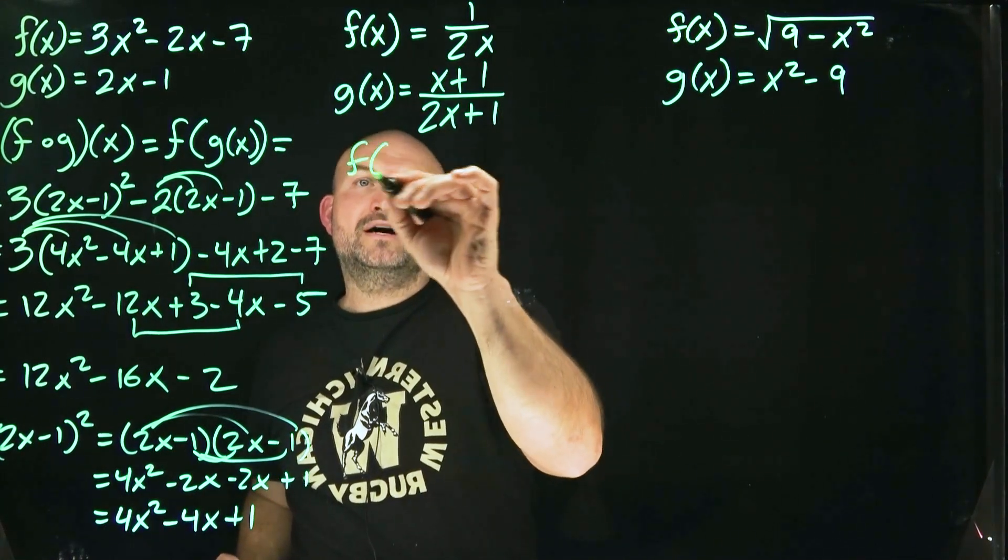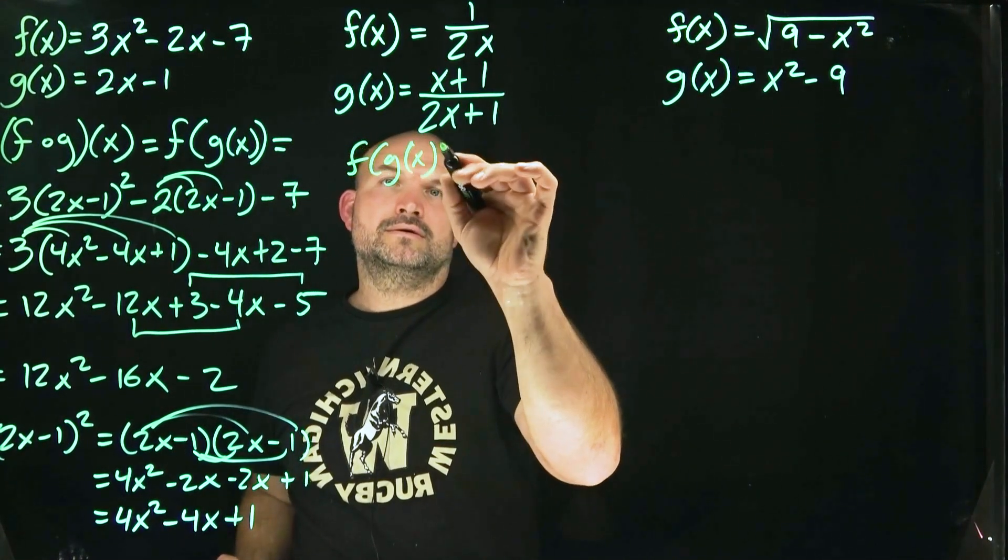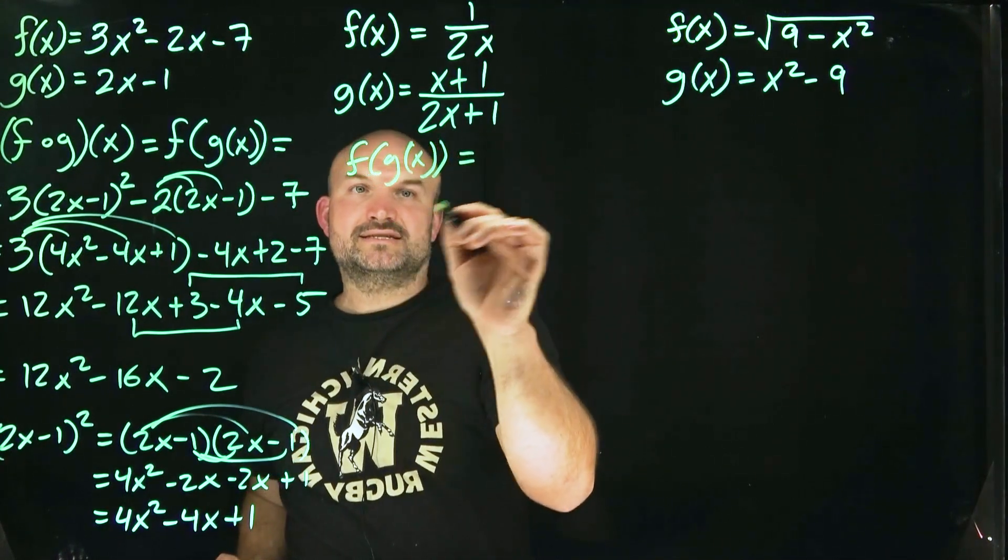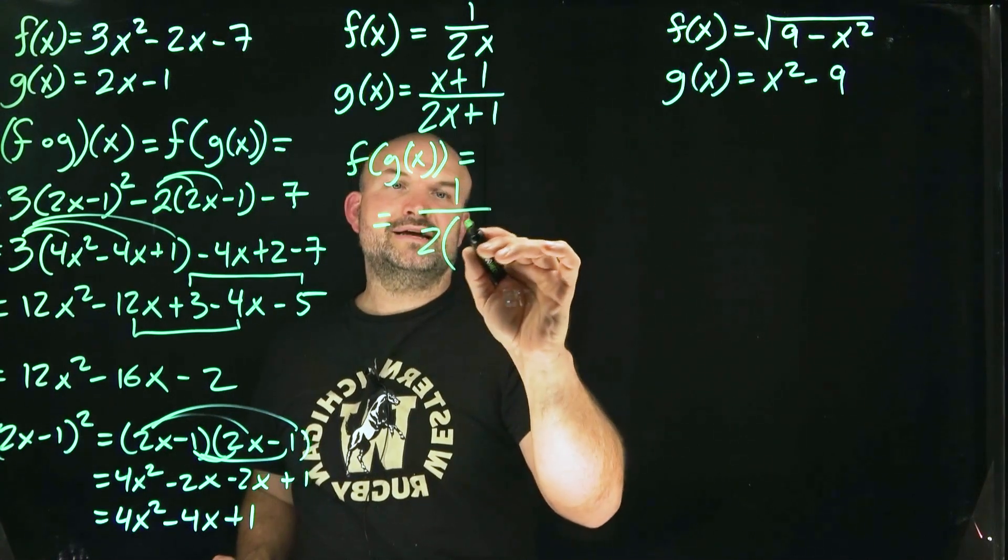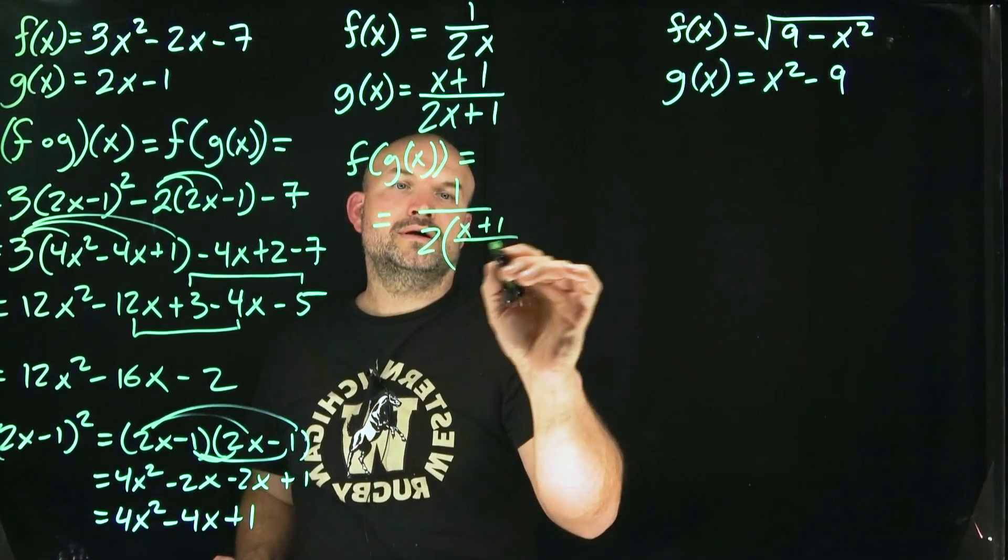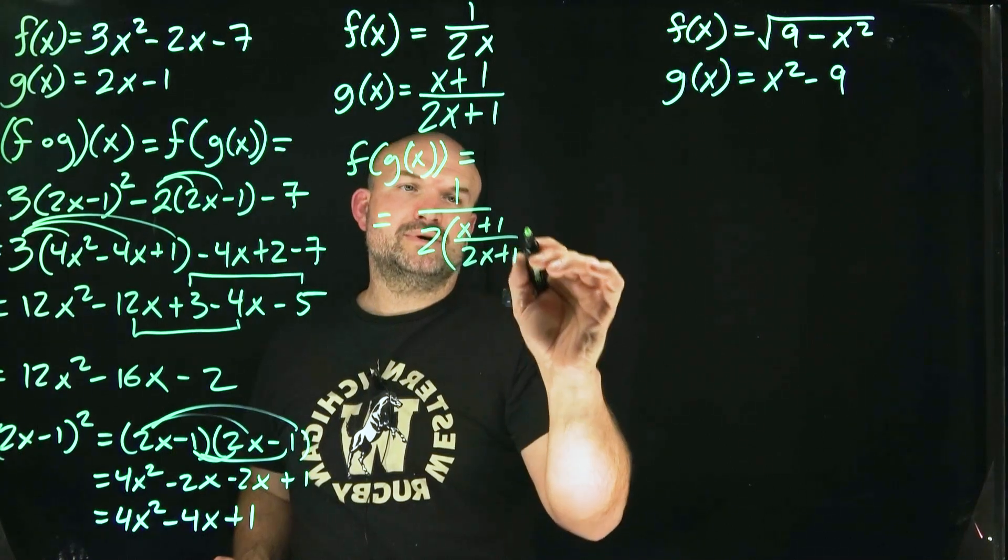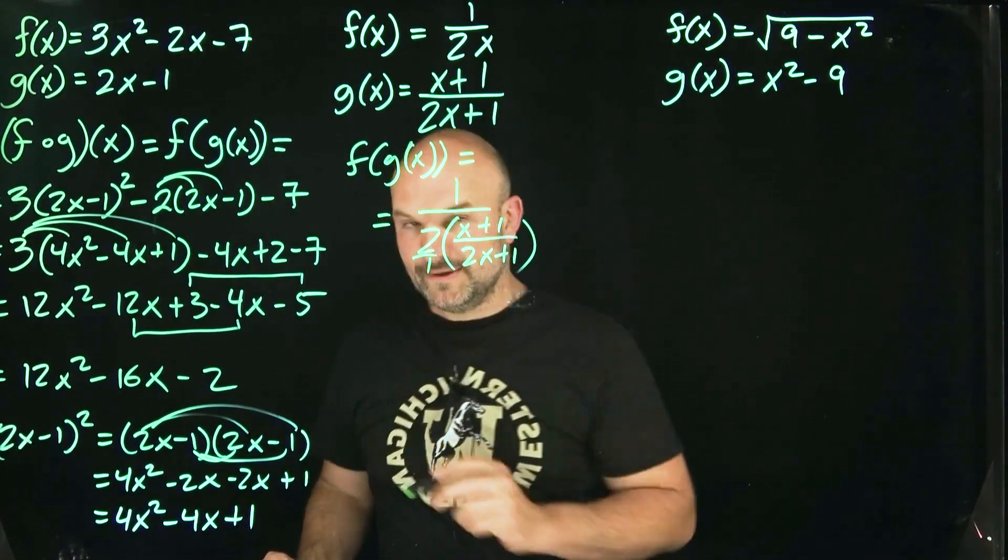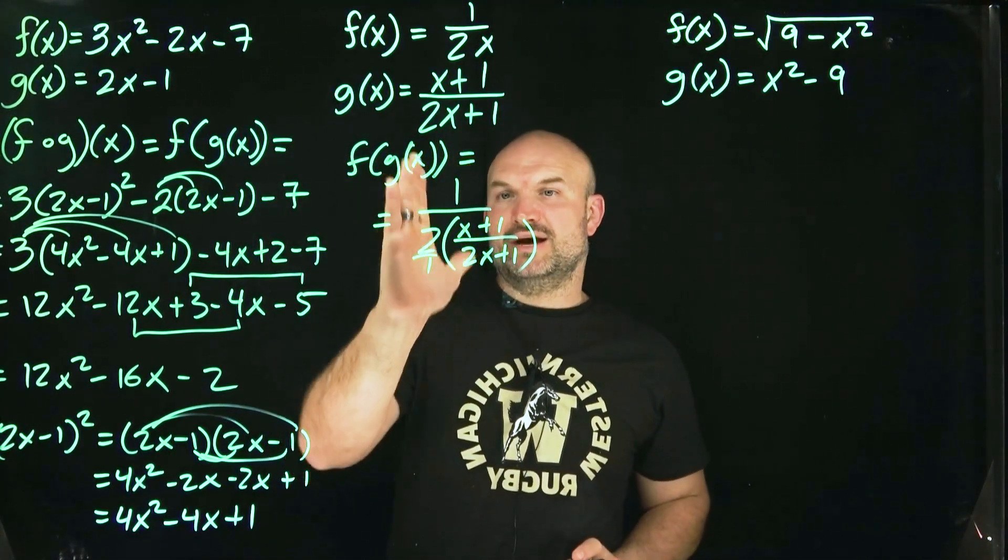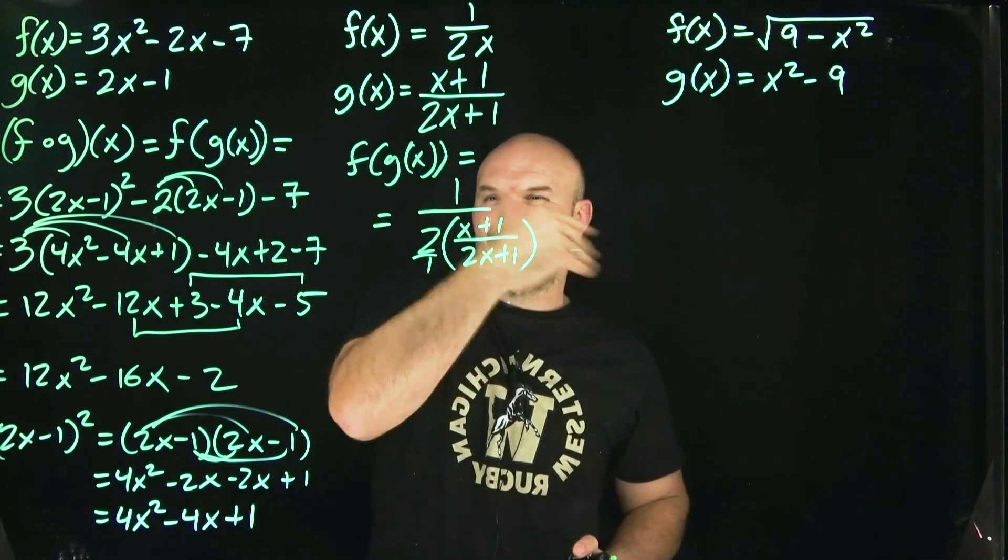So when I do that, my f of g of x is going to look something like this. So I'll just do it like this. So that's going to be a 1 over a 2 times x plus 1 all over a 2x plus 1. Okay. Now, technically, this 2, you can rewrite this as an over a 1, okay? So the first thing I'm going to want to do is go ahead and distribute that across.